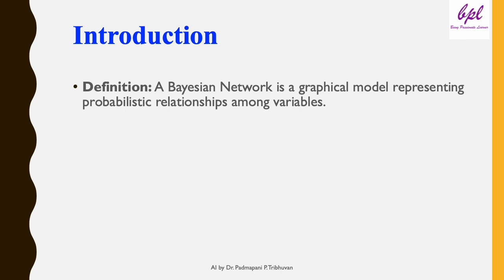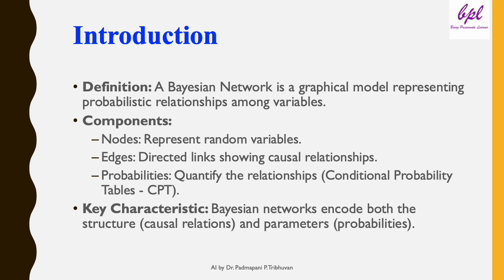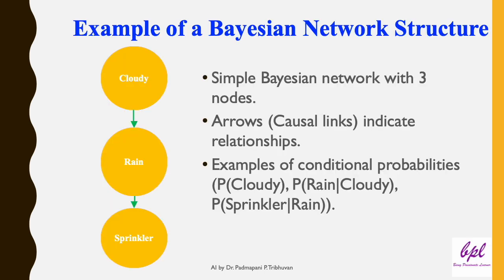Let's begin with the basics. A Bayesian network is a graphical model that represents probabilistic relationships among a set of variables. It is a directed acyclic graph where nodes represent random variables. Edges are directed links showing causal relationships between the variables. Probabilities are assigned to these relationships through conditional probability tables, or CPTs. The key advantage of Bayesian networks is that they allow us to model uncertain knowledge in a structured and efficient way. Here is a simple example of a Bayesian network.